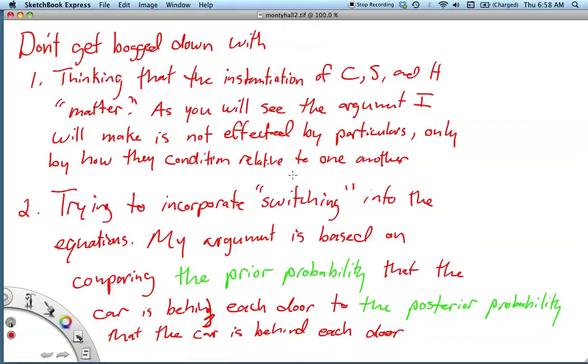Secondly, don't try to incorporate the switching variable, like whether or not you switch doors, into the equations. So the argument I'm going to make is based on comparing the prior probability that the car is behind each door to the posterior probability that the car is behind each door. And whether or not you switch is basically an afterthought when you consider and compare those two probabilities.